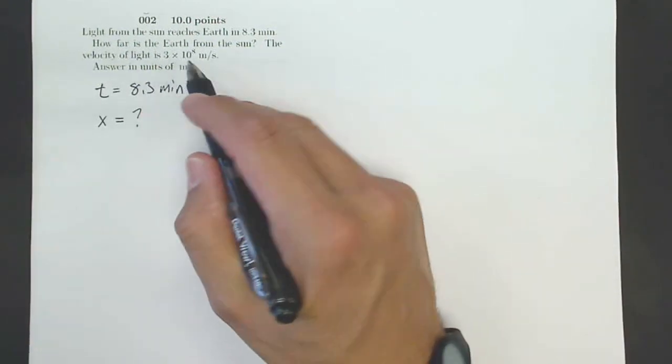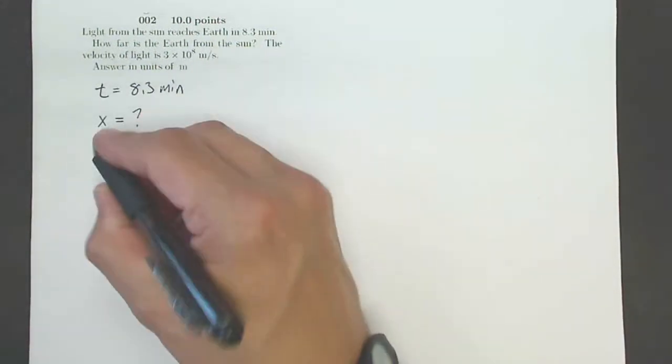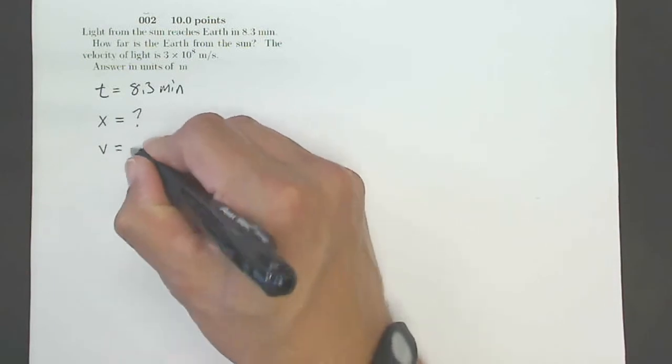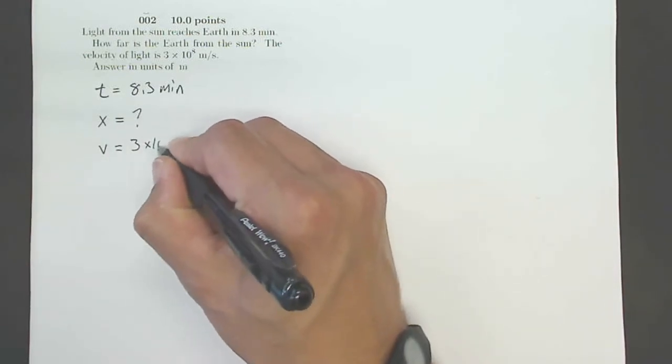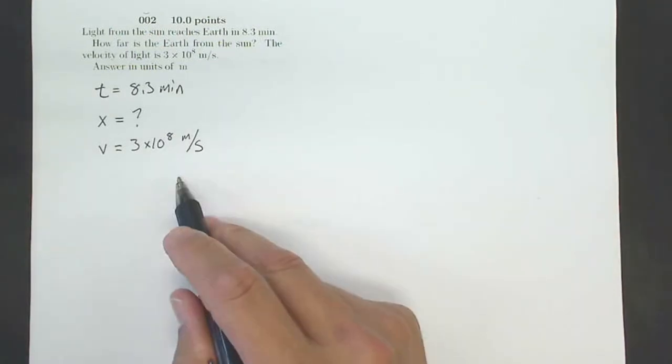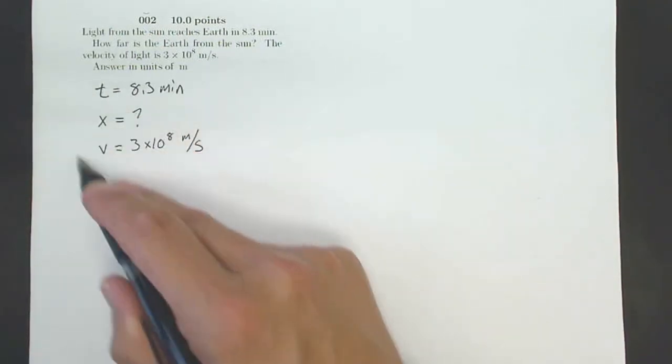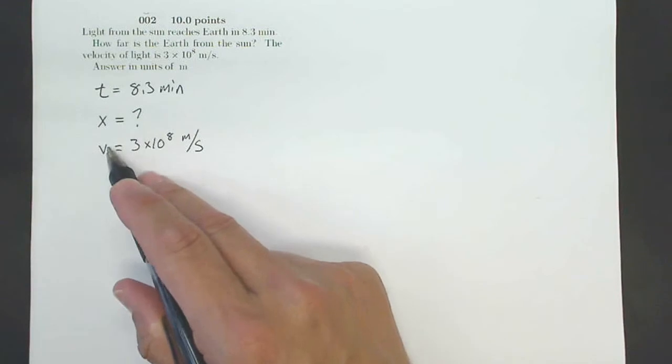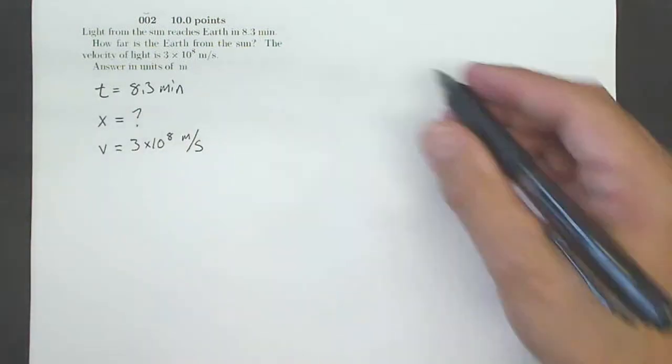The velocity of light is 3 times 10 to the 8th meters per second. That's clearly a velocity equals 3 times 10 to the 8th meters per second. Now the problem is I need to find out if I have a relationship between my velocity, my distance, and my time. And I do.